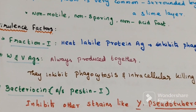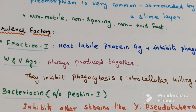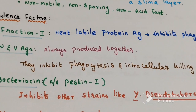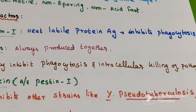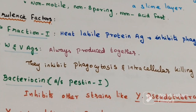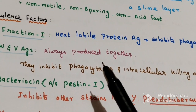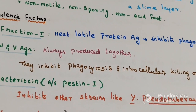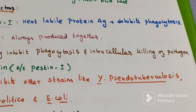Second one is W and V antigen. They are always produced together. They inhibit phagocytosis and intracellular killing of the pathogen.